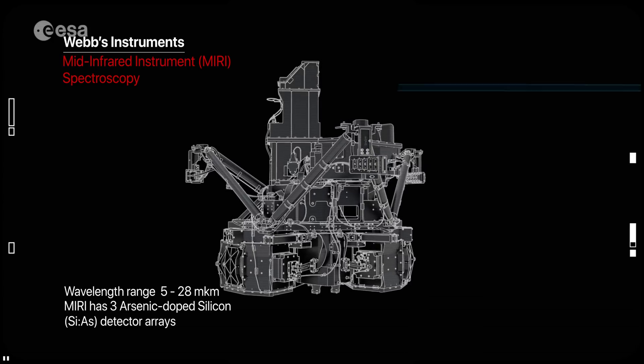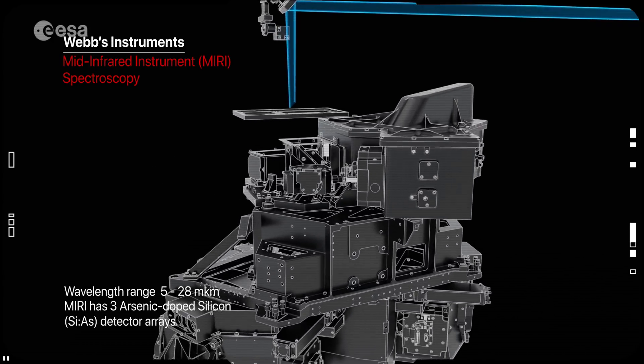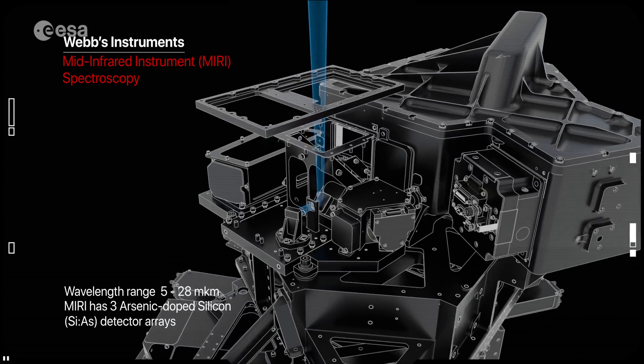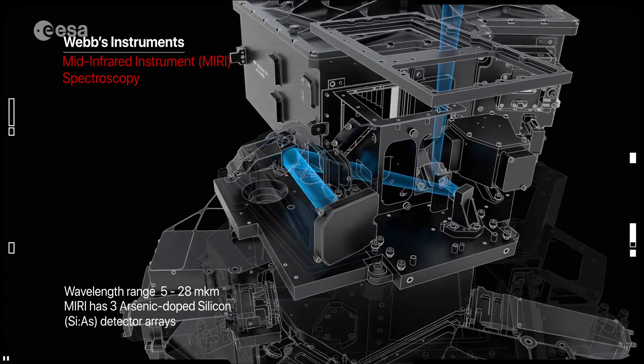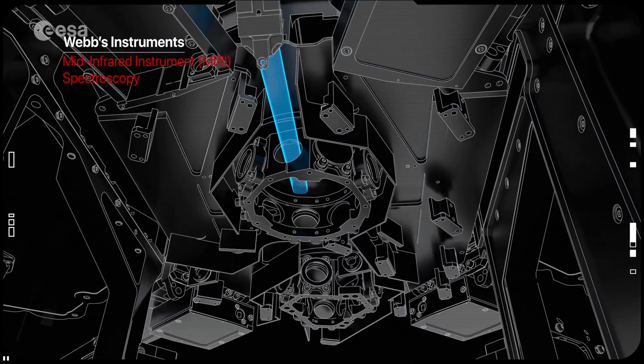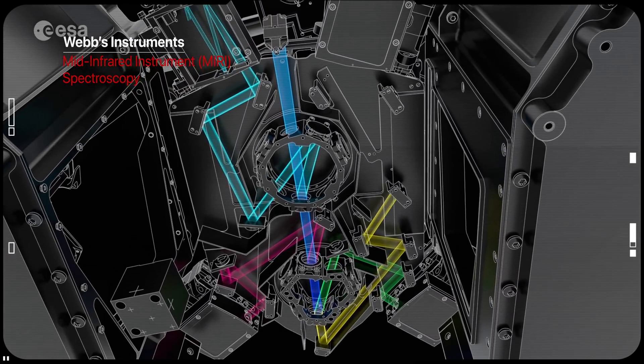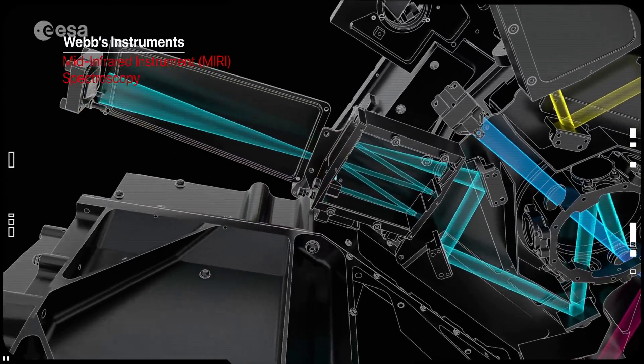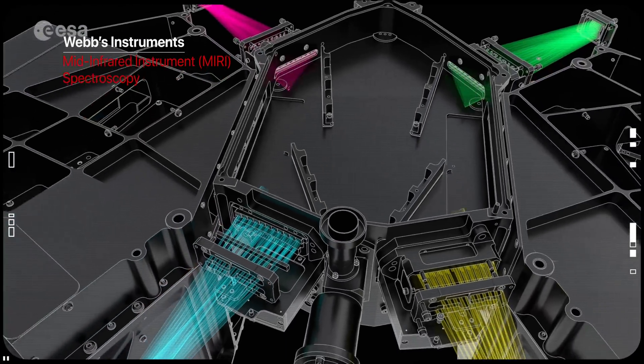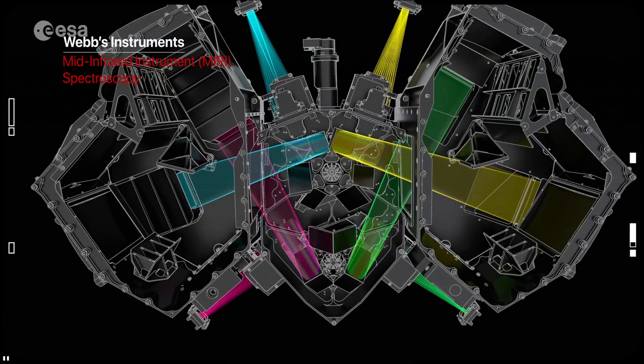Mid-Infrared Instrument or MIRI: it provides imaging and spectroscopy capabilities in the mid-infrared wavelengths. MIRI is equipped with a camera, coronagraphs, spectrographs and an integral field unit, which is a combination of a camera and spectrograph used to capture and map spectra across a field of view. MIRI operates over a wavelength range of 5 to 28 micrometers.